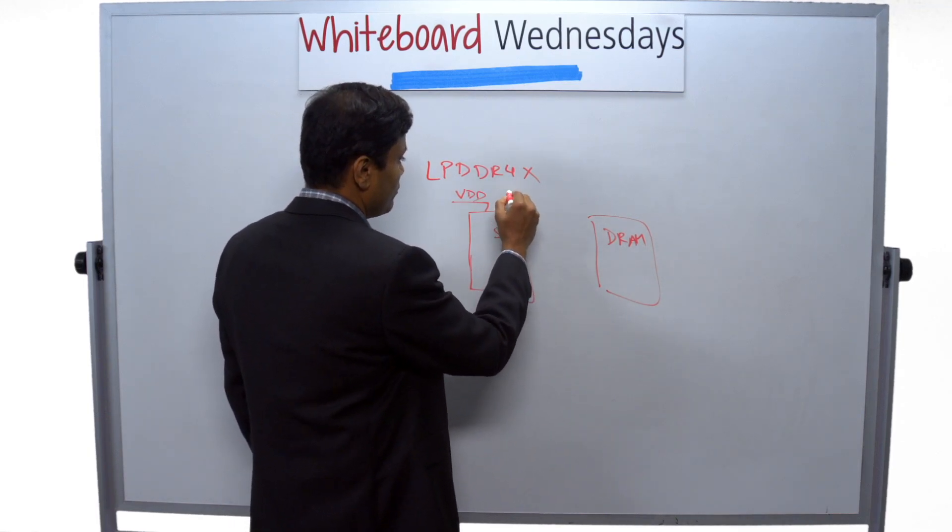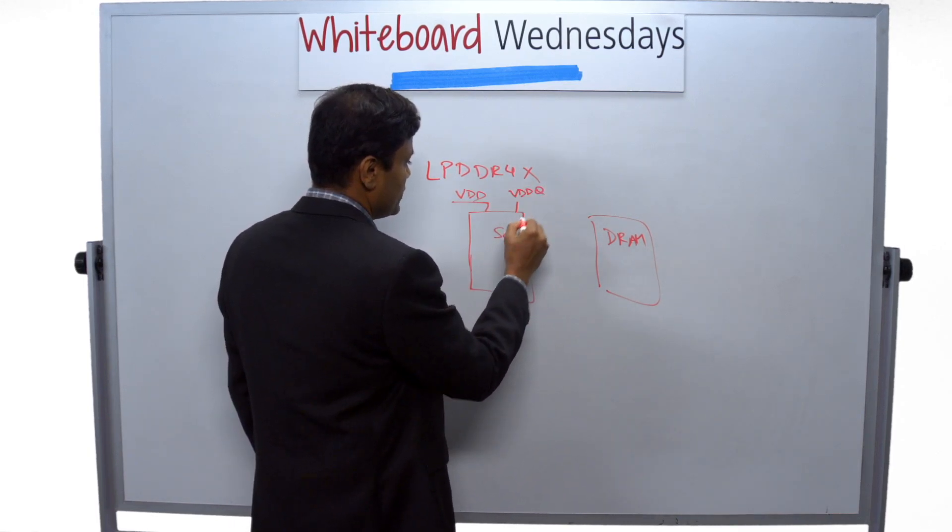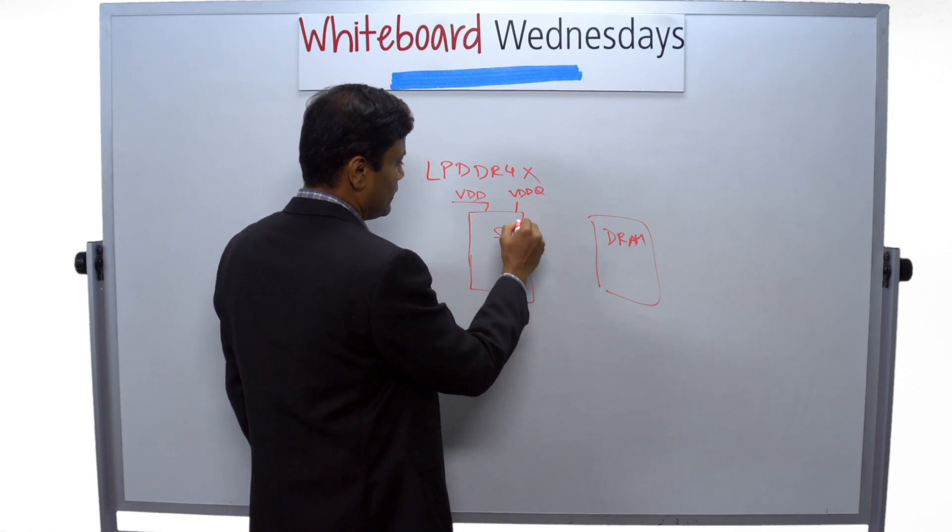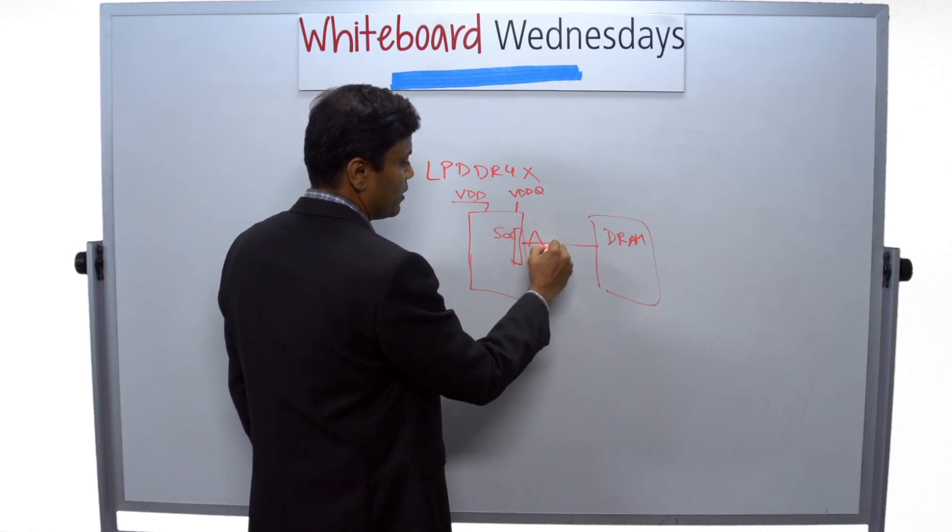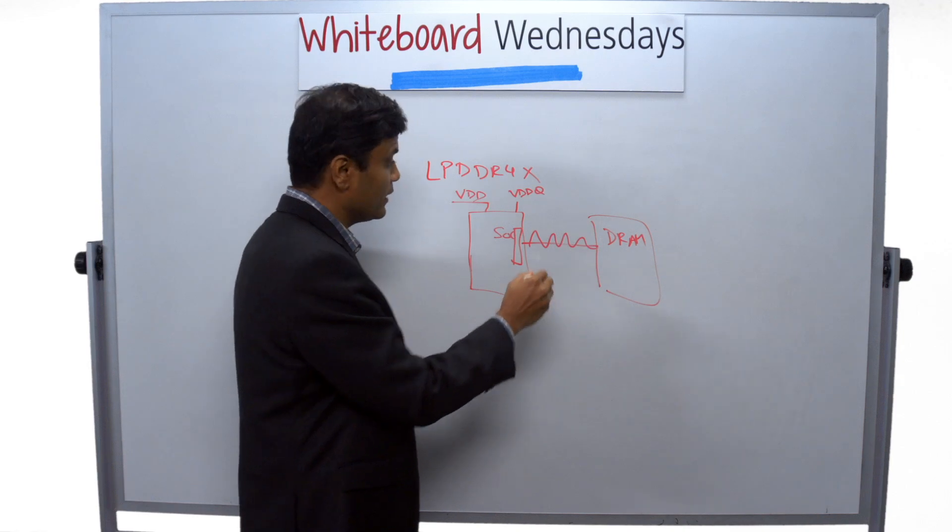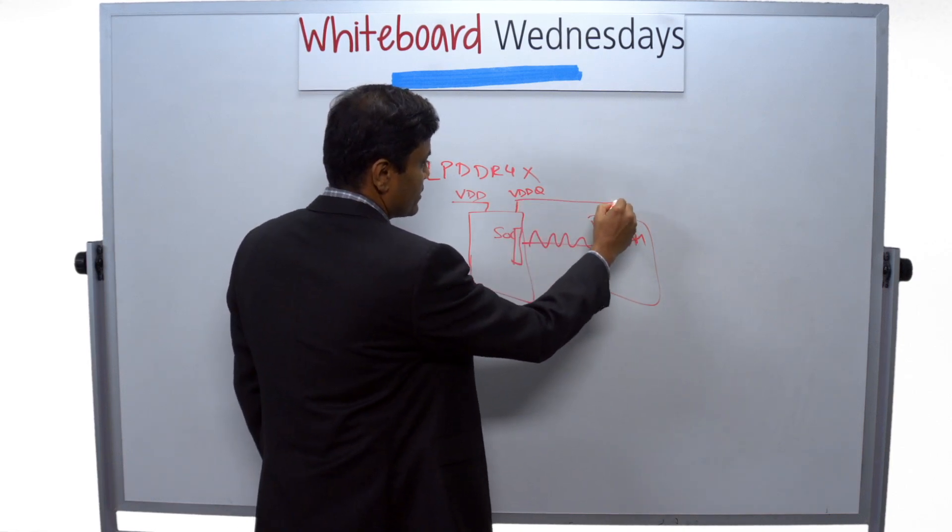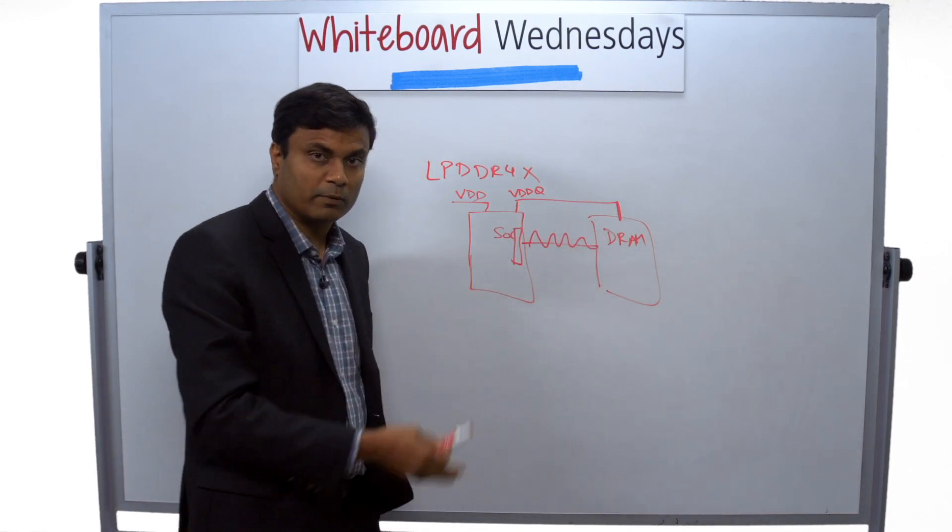It also has what we call VDDQ, which is responsible for driving the interface signals on the memory interface to the DRAM. And this supply is shared with the DRAM itself, so they both can communicate on a common threshold voltage.